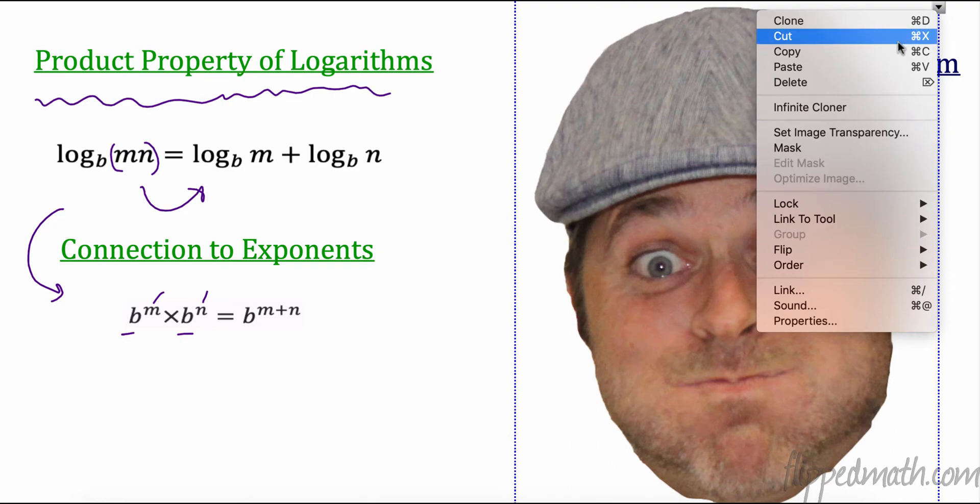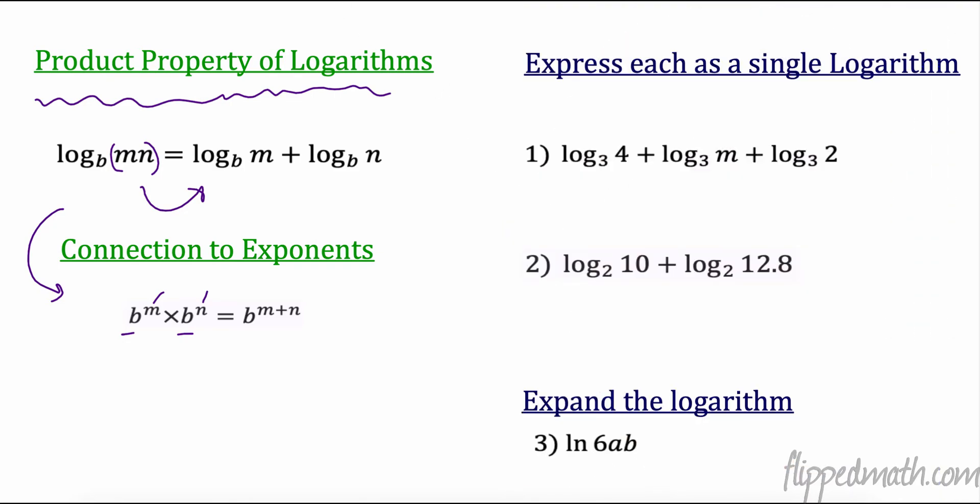Let's take a look at a few problems and try some out. The first one says express each as a single logarithm. So I'm going to go backwards. I have adding, so I want to go to a single logarithm. Since I'm adding and they're all the same base, I can put them all in the same log. So log base 3, I keep the base, and I multiply 4 times m times 2. And in fact, we can even simplify that. So that's log 3 of 8m.